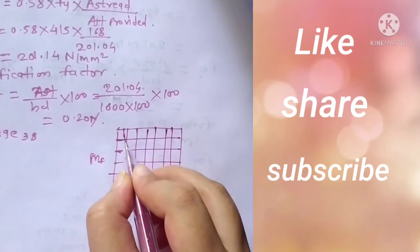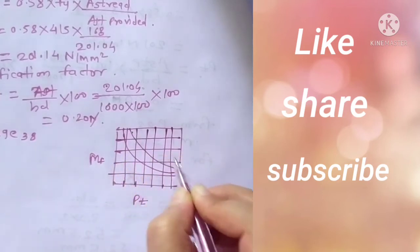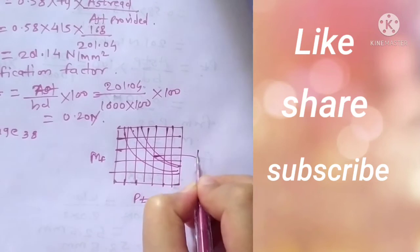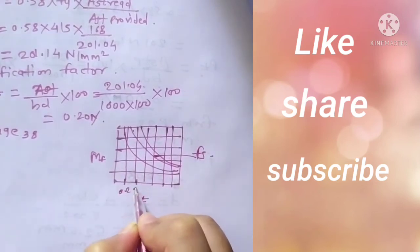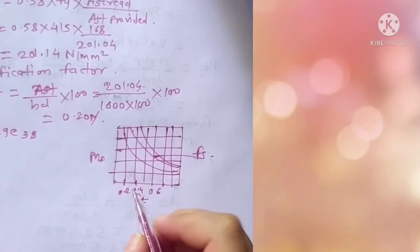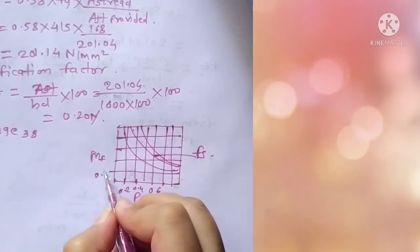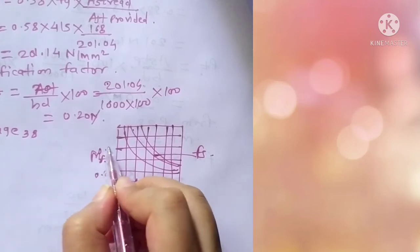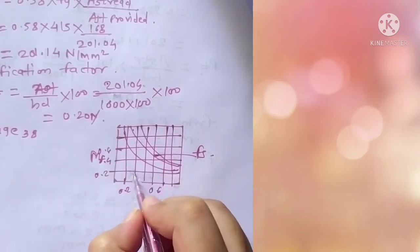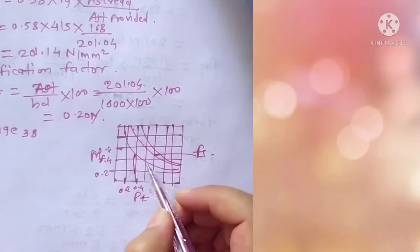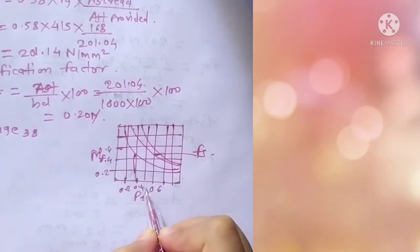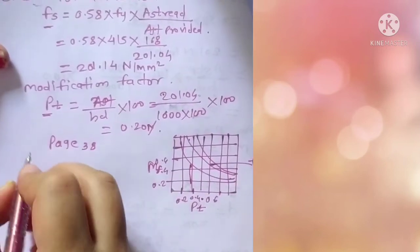If you will refer page number 38 of IS code, there is one graph with percentage of steel on one axis and modification factor on another, with graphs showing values. Wherever these two values will interpolate, that is Fs and your percentage of steel, you will get the modification factor. We got modification factor as 2 approximately.